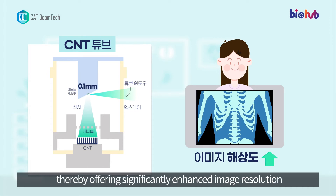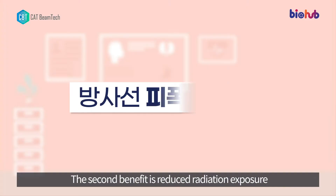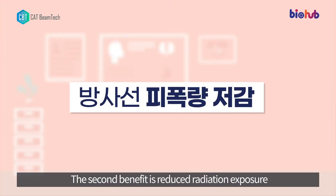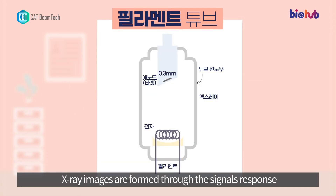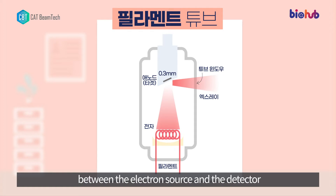On the other hand, CAT BeamTech's CNT X-ray tubes feature a minimized emission area and focal spot size, thereby offering significantly enhanced image resolution. The second benefit is reduced radiation exposure. X-ray images are formed through the signal response between the electron source and the detector.